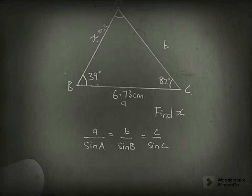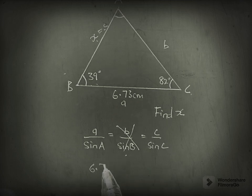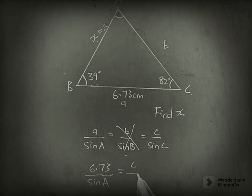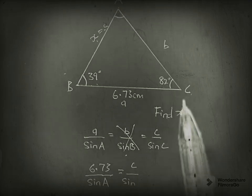In this question, we are told to find x. So we can leave out the b part and say a is given as 6.73 over sin A equals c, which is the same as x, over sin C which is 82 degrees.